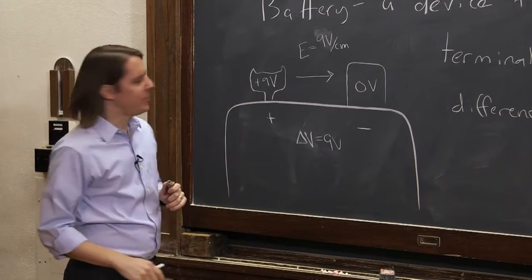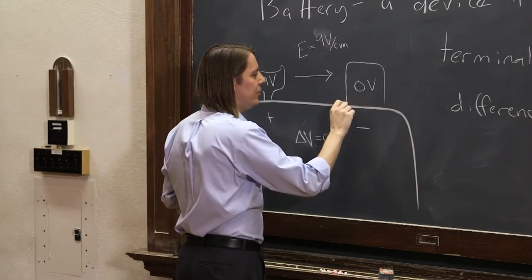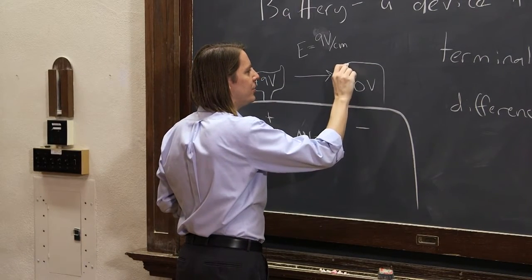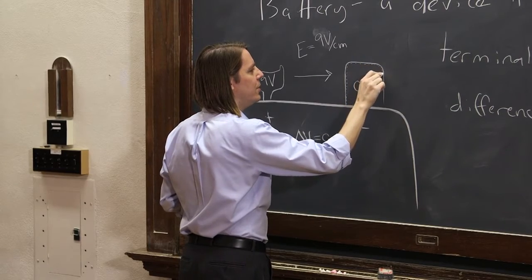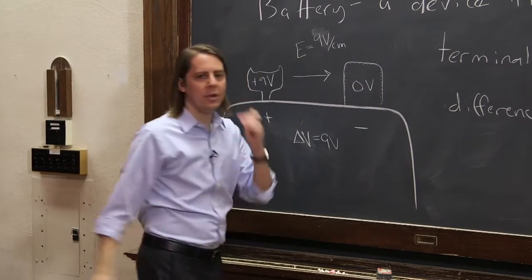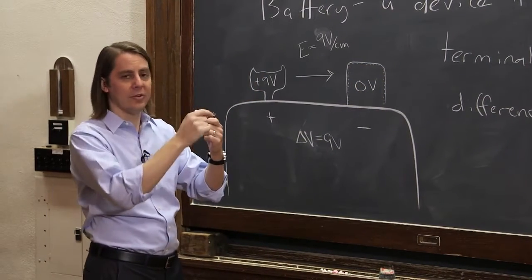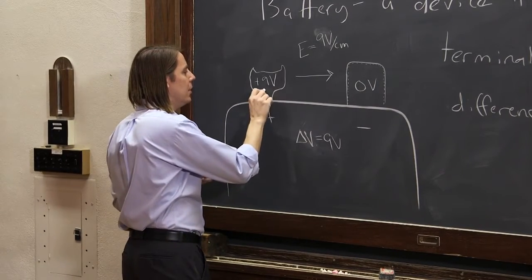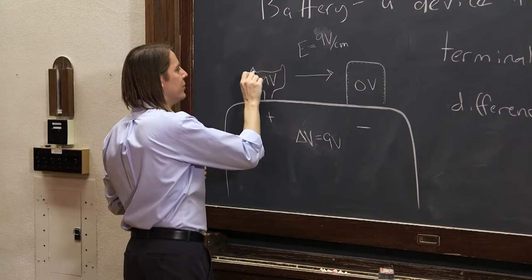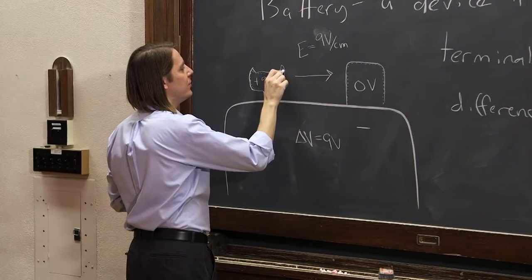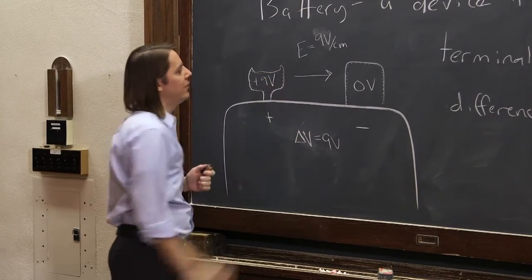We can also think about the potential. Well, these are conducting electrodes, so they must have equipotential surfaces all along their surface. So here is the zero-volt equipotential surface. It's the surface of that terminal. And here is the 9-volt equipotential surface. It's the surface of that terminal.